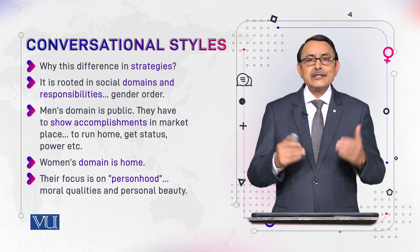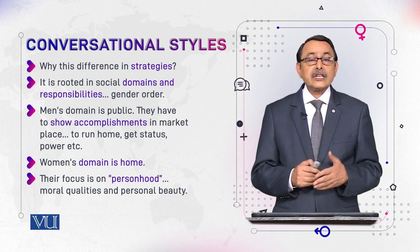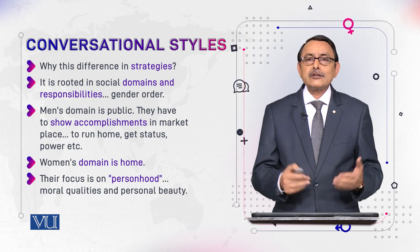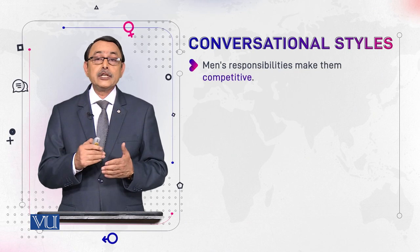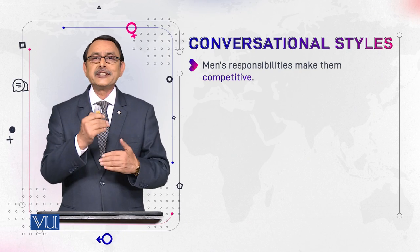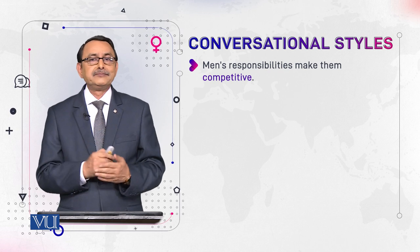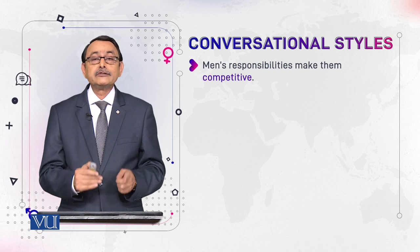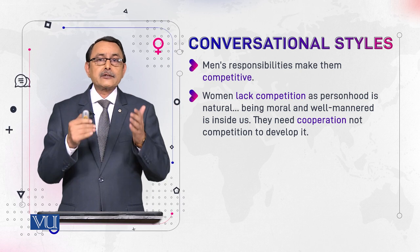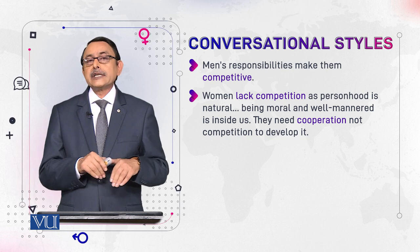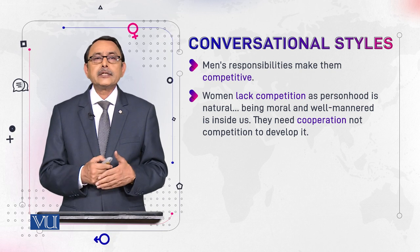Women's domain is home, and their focus is on personhood. For personhood they need to be good, attractive — and for these things they don't need to be competitive, because these things are either socially acquired or naturally present. Men's responsibilities make them competitive; they choose these strategies because of their roles. Women lack competition because their domain is home and their focus is personhood — for which they need cooperation from other women and people around them.